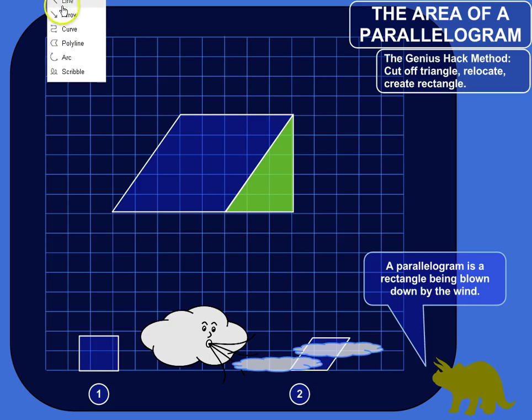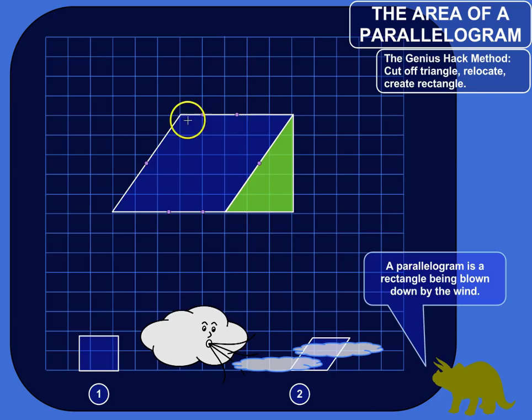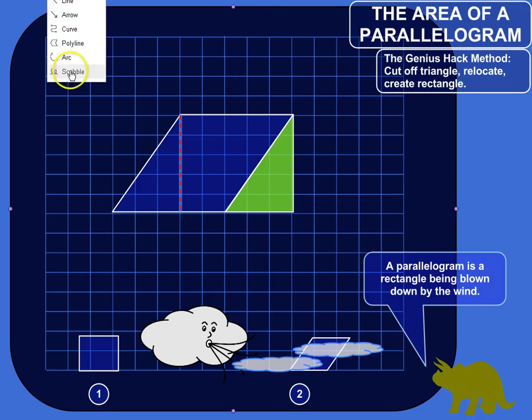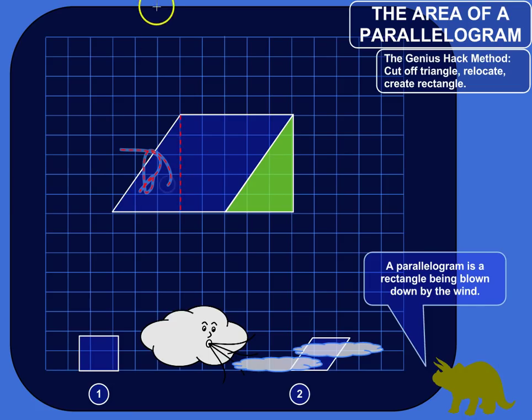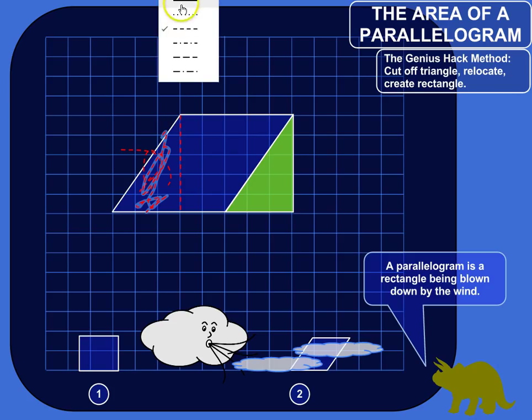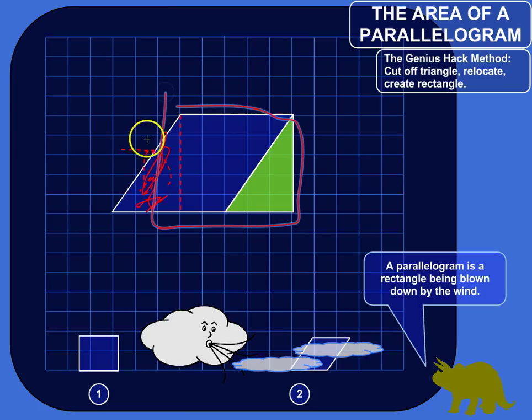And what that does is, I'm just going to draw a line here to show that we've cut this off. Let's make a straight dotted red line. So this is gone, ignore. We've moved this triangle over to this side of the parallelogram, and what does it form? It forms a rectangle.